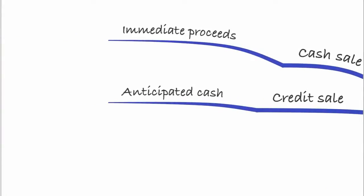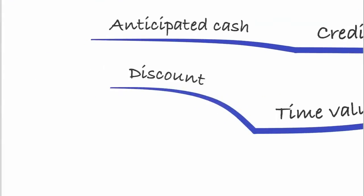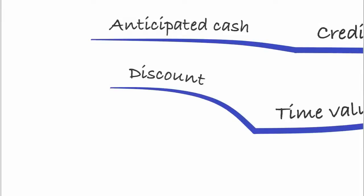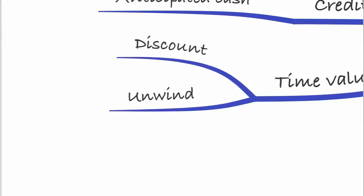If time value is material — say you don't expect to receive the money for three years — you need to discount it, and then unwind that discounting over the time period until you receive the revenue. If the time value is material, meaning anything more than a year, you discount it and unwind the discount.